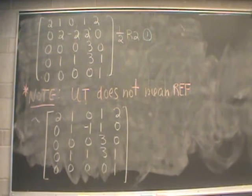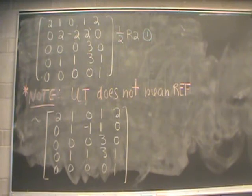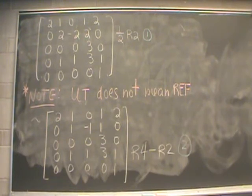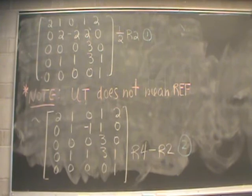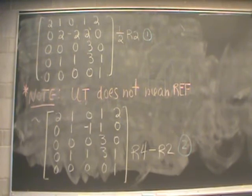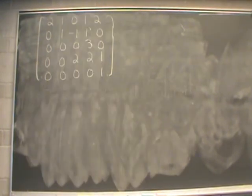What I want to do is form a leading 1 in column number 2 so that I can cancel out the 1 underneath it. Our first elementary row operation, labeled number 1, is to half row 2. That's going to correspond to the first elementary matrix we calculate later. Our second elementary row operation is to take row 4 subtract row 2, and that's going to be our second elementary matrix. Doing that second elementary row operation leads us to the next matrix, completing columns 1 and 2.